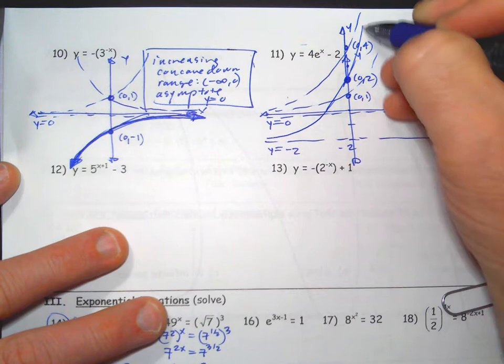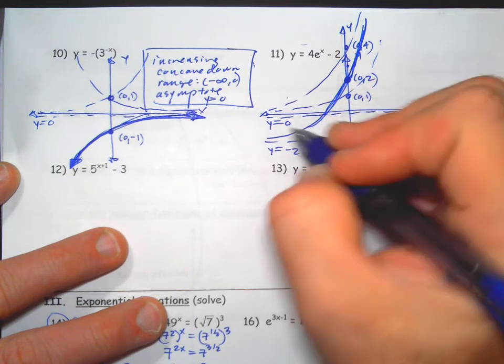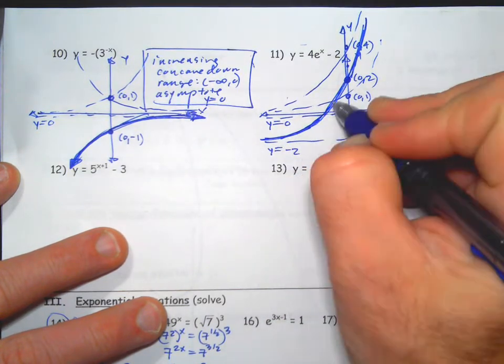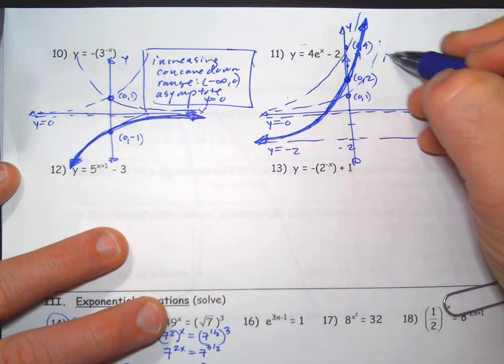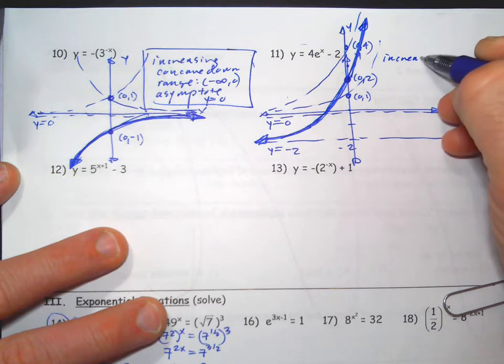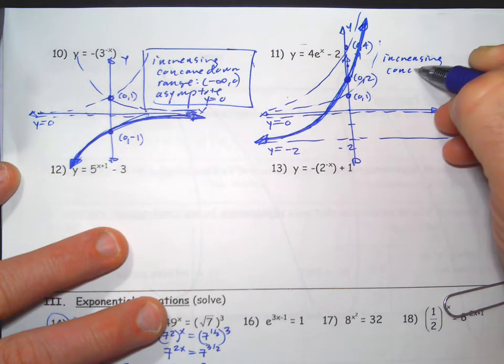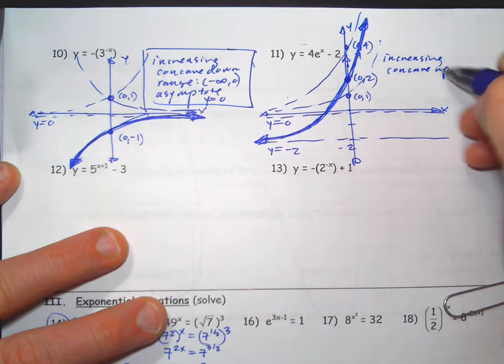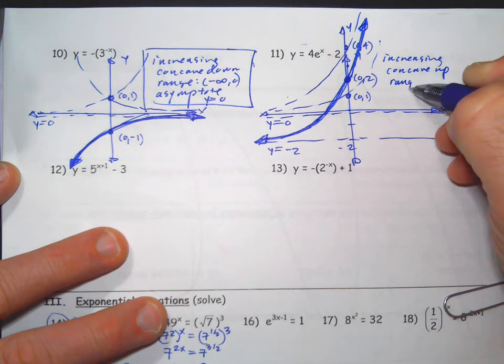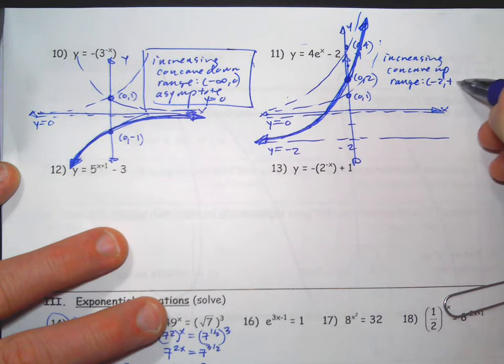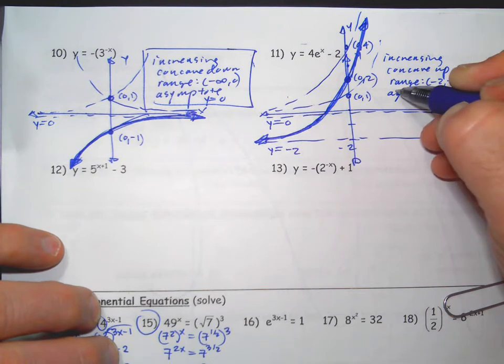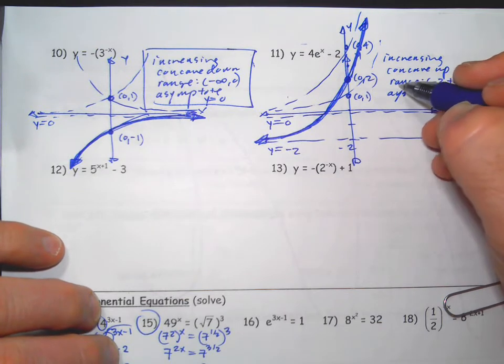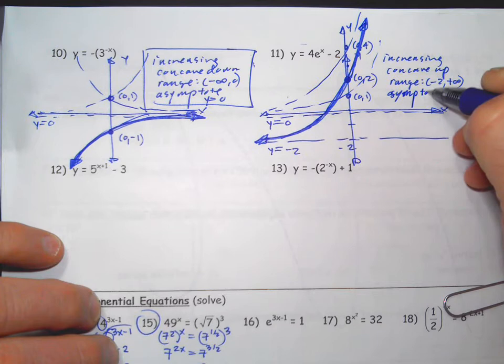Y equals negative two is new, and then this is zero two as the new y-intercept. I don't care about the x-intercept, just keep track of that y-intercept. There's your graph. It is increasing, concave up. Range is negative two to positive infinity. Asymptote is y equals negative two.